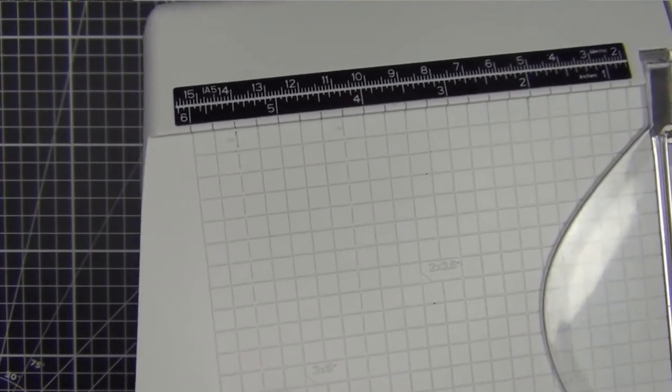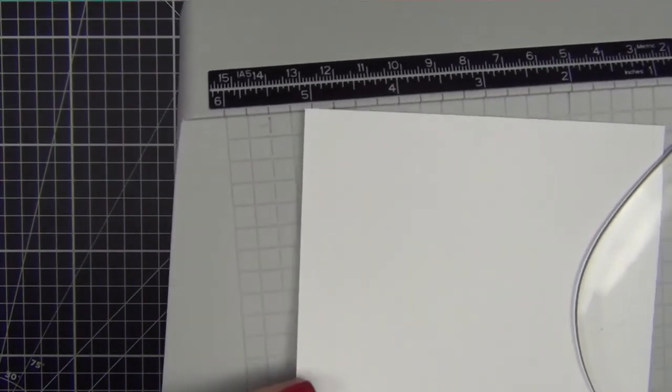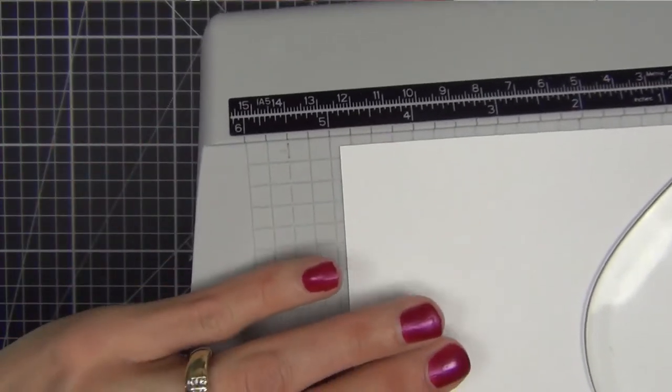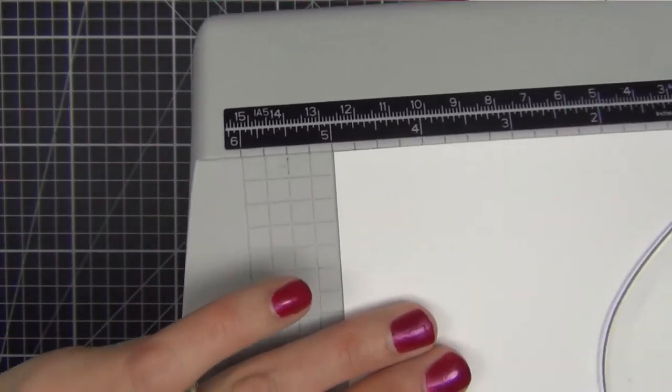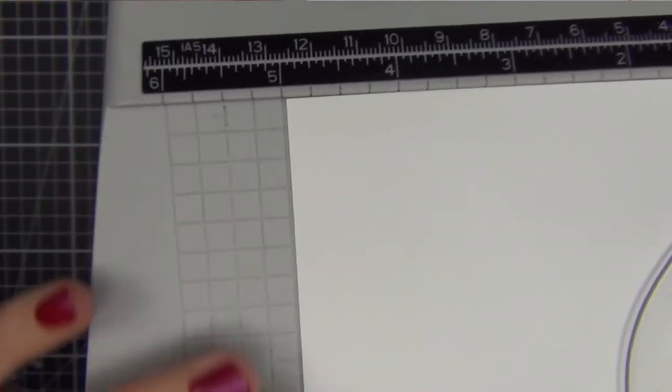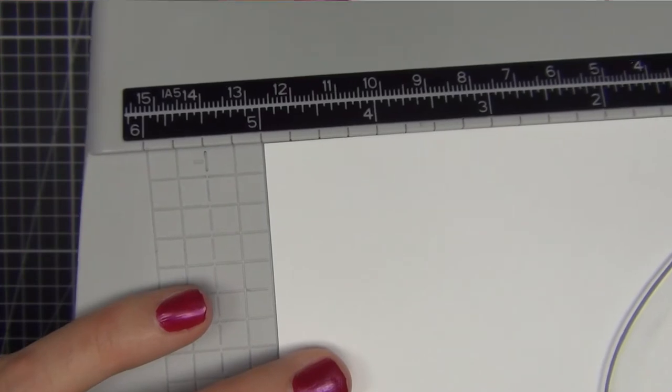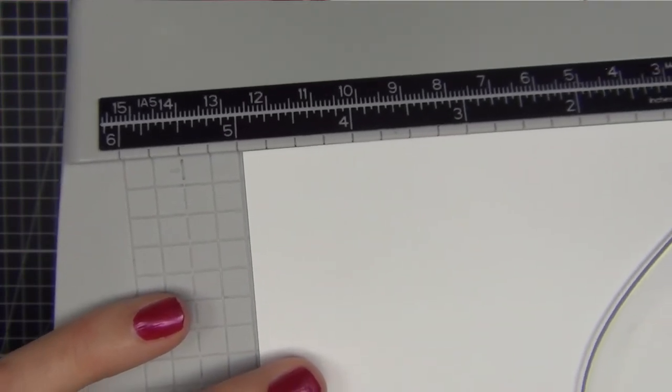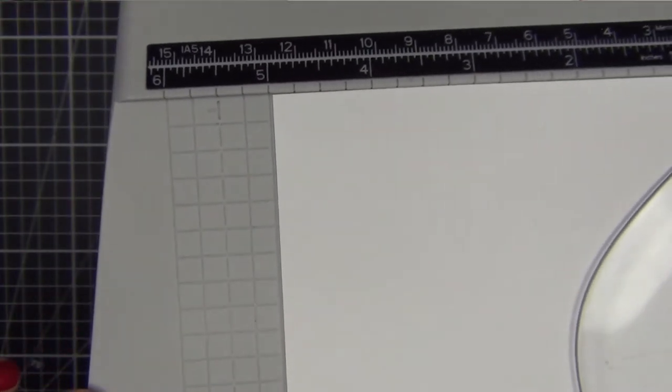You want to make sure that when you put your piece of paper on, if you put your piece of paper on, you butt it up right against the line, right against. You don't want to go over, you don't want to go in half, you want to butt it up right before that line.